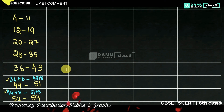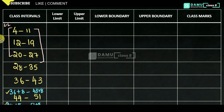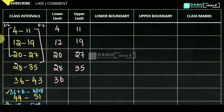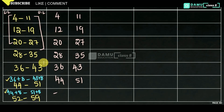Now identifying lower and upper limits: all left-side values are lower limits (4, 12, 20, 28, 36, 44, 52), and all right-side values are upper limits (11, 19, 27, 35, 43, 51, 59).